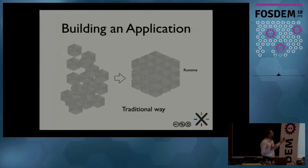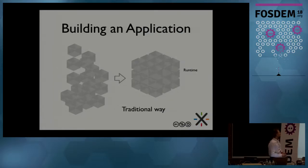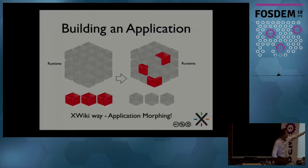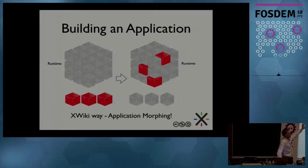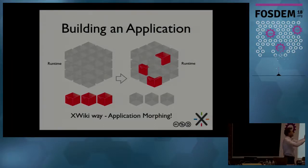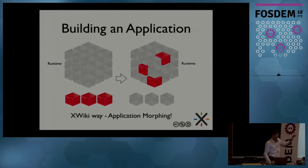If you take the traditional ways of creating an application, you use a general-purpose language such as C, Java, or Python — you have building blocks and you build them into a runtime. That's the traditional way. What we're doing here is taking a runtime that already exists — that's the XWiki runtime — and we're able to modify as much as we want from it: remove pieces, add pieces, create your own pieces to morph it into exactly the application you want it to be. That's the capability of XWiki.